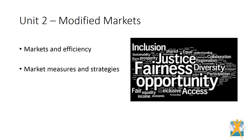In Unit 2, students explore the imperfections within markets and the economic concept that markets do not always deliver socially desirable or efficient outcomes. They investigate the causes and effects of market failure and the measures and strategies that may be used to modify markets in attempts to maximize economic and social well-being.